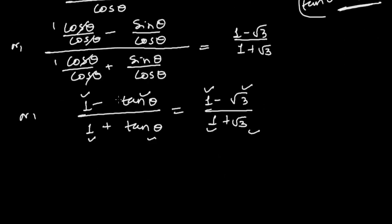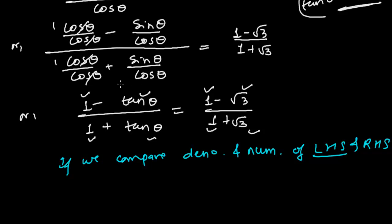So if you compare left side and right side, if we compare denominator and numerator of LHS and RHS, left hand side and right hand side, what we will get? We will get directly: tan θ = √3. Simply see, if you put √3 here, then they will be equal.